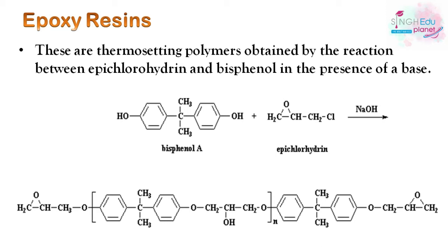The low molecular mass linear polymer is converted into a cross-linked polymer by the action of a cross-linking agent such as diethylenetriamine, which creates a cross-linked network structure.